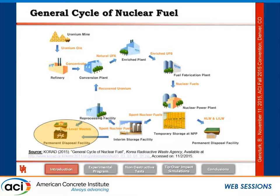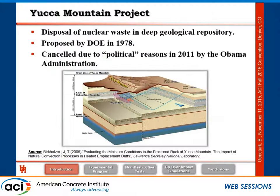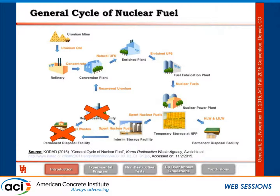Regarding the permanent disposal facility, you have probably heard about the Yucca Mountain project. This was initiated in 1978 by the Department of Energy — a deep geological repository where all spent nuclear fuel in the United States would be disposed of. This project was cancelled in 2011 by the Obama administration due to political reasons, which means there is currently no permanent storage facility for spent nuclear fuel in the United States. Reprocessing is also not done in the United States, leaving only two options: interim storage facilities and temporary storage at nuclear power plants.